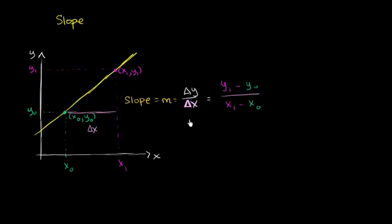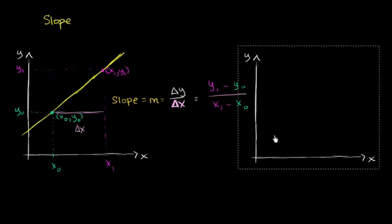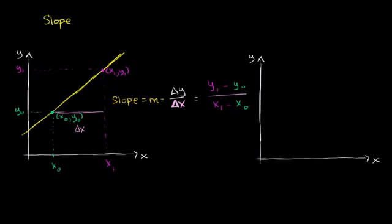Now I'm going to introduce a little bit of a conundrum. Let me draw another axis right over here. So that was for a line — and a line by definition has a constant slope. If you calculate this between any two points on the line, it's going to be constant. But what happens when we start dealing with curves — non-linear curves?